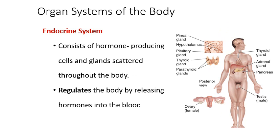The endocrine system is a series of glands distributed all over the body that are important for producing hormones. Hormones help regulate the body by communicating messages across the body, just in a different way than the nervous system communicates. So both nervous and endocrine systems are for communication, but the endocrine system operates in a very different way.